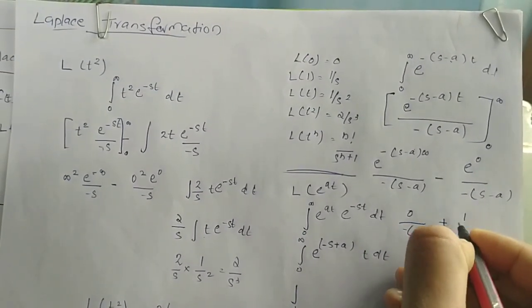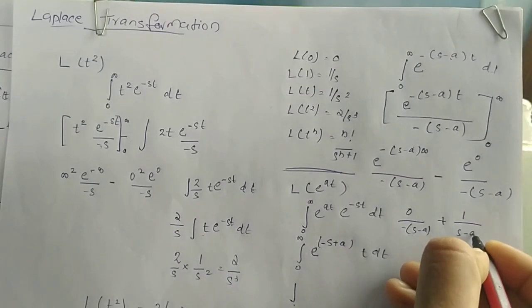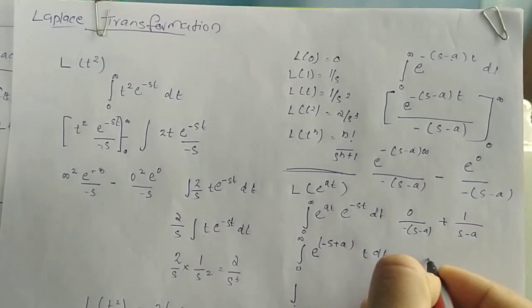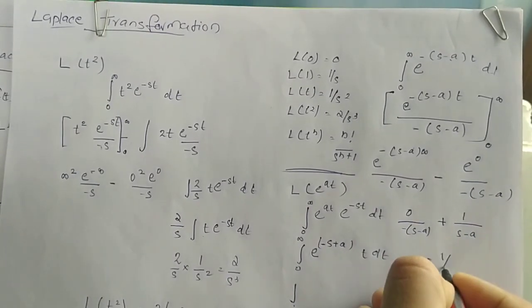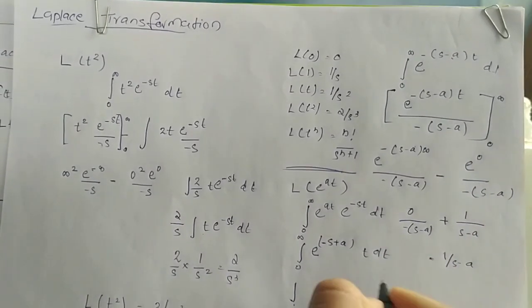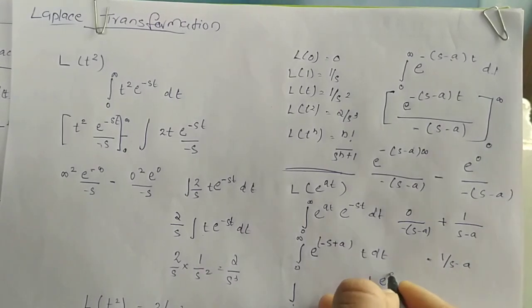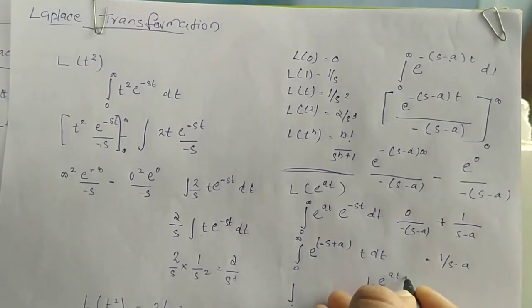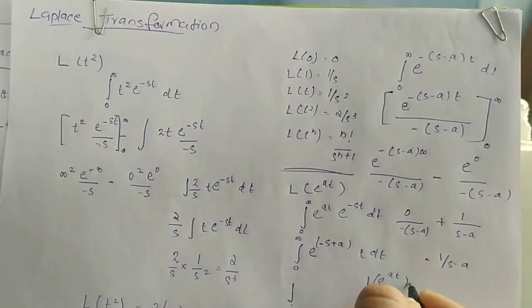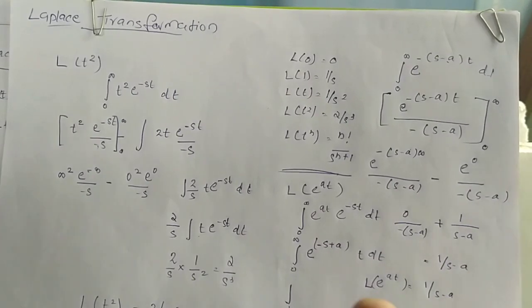Applying the limits, the term at infinity goes to zero and the term at zero gives 1 by s minus a. Therefore L{e^(at)} is equal to 1 by s minus a.